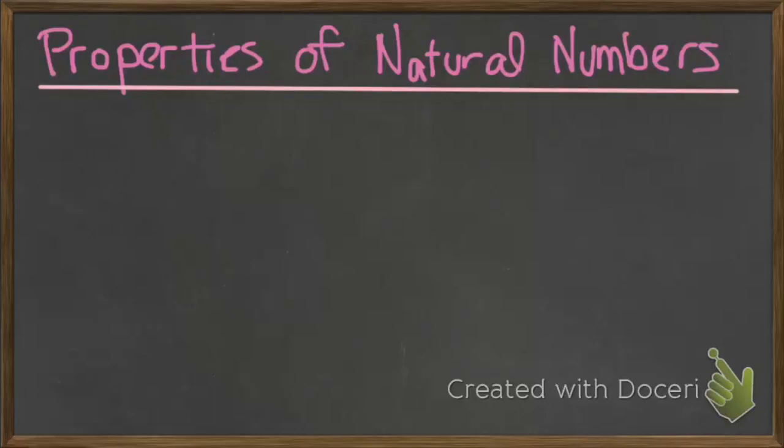In this lesson, we're going to talk about properties of natural numbers — the three main properties of natural numbers, but also we're going to talk about the properties of 0 and 1 specifically. We're first going to start with the three main properties of natural numbers that we are going to teach in grade 7.